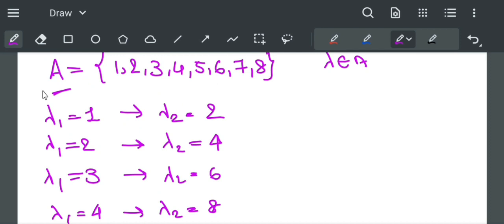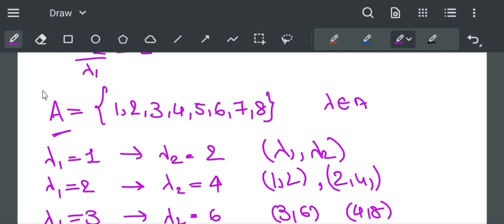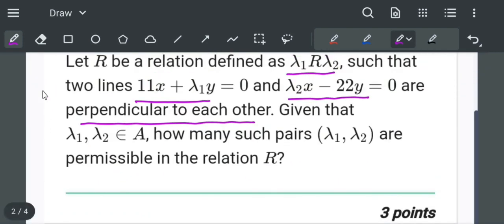So the pairs (λ₁, λ₂) are (1, 2), (2, 4), (3, 6), and (4, 8). So total 4 pairs of λ₁ and λ₂ are permissible in relation R. The answer is 4. Thank you.